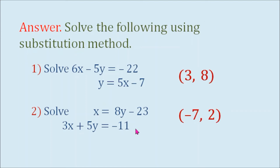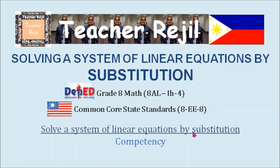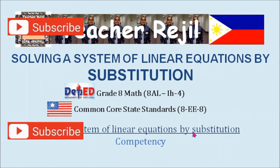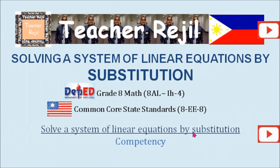For number 1: x equals 3 and y equals 8, or we can write our answer as coordinates (3, 8). For number 2: x equals negative 7 and y equals 2, or we can write our answer as coordinates (negative 7, 2). Did you get the two items right? I hope you did. Thanks for watching, guys. This is Teacher Radjil. Keep safe.